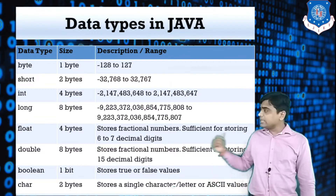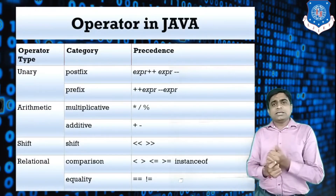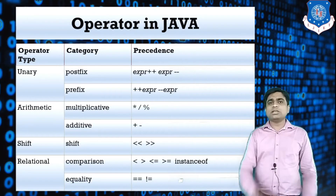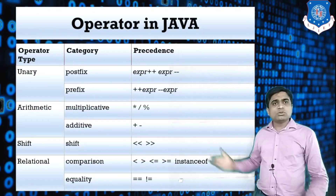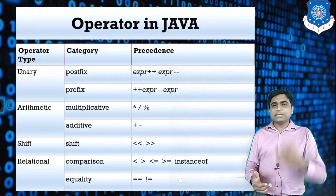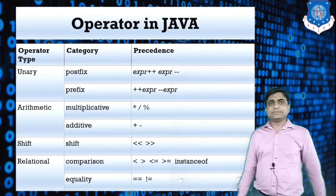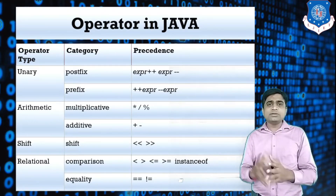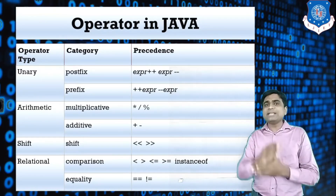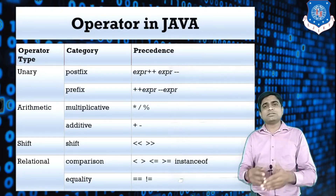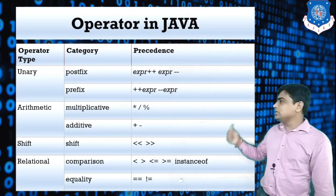The next topic is operators in Java. The first is the unary operator. Most operators in Java are similar to C and C++. In the unary operator, there are two forms: prefix and postfix, using plus-plus and minus-minus signs. The plus-plus operator increments the value by one — for example, if a is 5, then after a++ the value becomes 6, which is equivalent to a = a + 1.